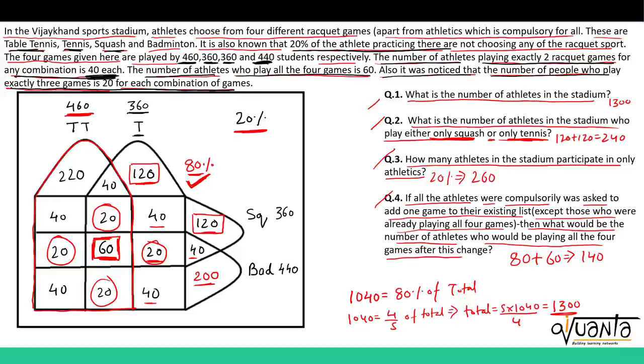So 140 is the answer to the fourth question. This was a very basic set — we simply had to put down all the values in the regions. I hope you understood this. If there is any doubt, please comment below. Thank you.